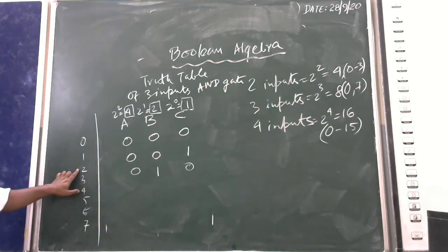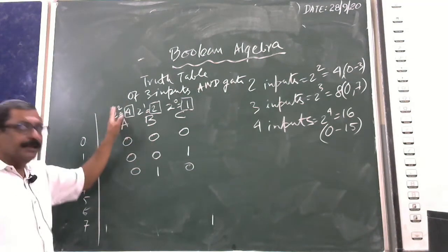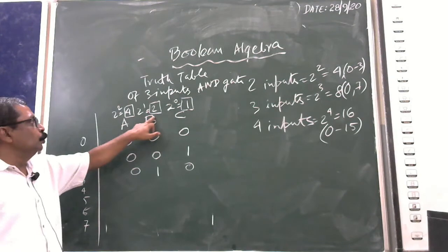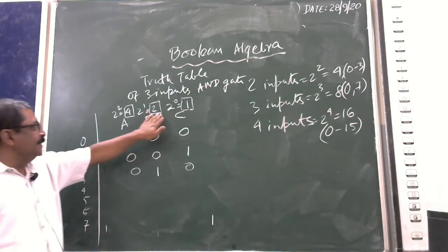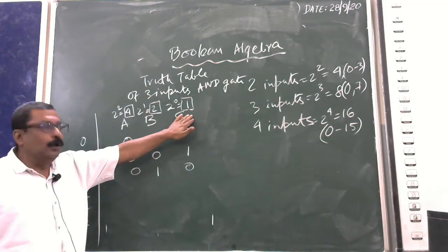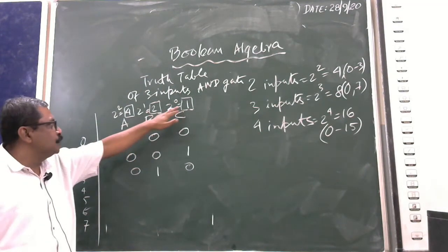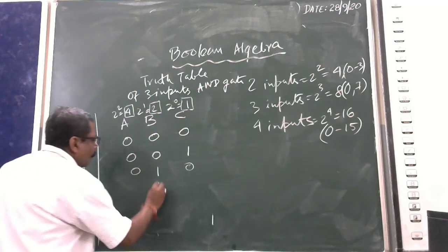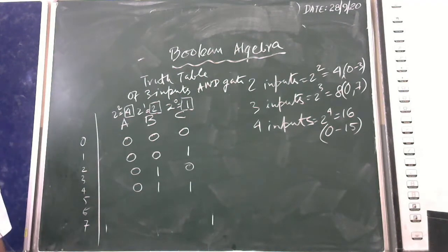For value 2, it is at position 2 to the power 1, so B is ON — giving 0, 1, 0. For value 3: since 3 is not a power of 2, we decompose it as 2 + 1, meaning B and C are ON — giving 0, 1, 1.